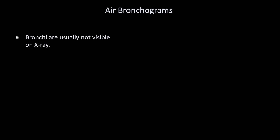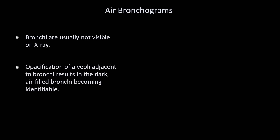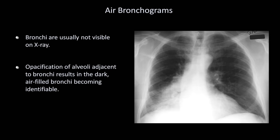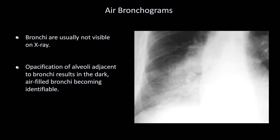First up are air bronchograms. Since bronchi are relatively thin-walled air-filled structures surrounded by air-filled alveoli, they are usually not visible on x-ray. However, opacification of alveoli adjacent to a bronchus results in the dark air-filled bronchi becoming identifiable against a white background. In this example, the patient has opacification of the right lower lung zone, probably the right middle lobe. If we zoom in on the opacification, we can see an outline of a dark branching structure which are the bronchi.